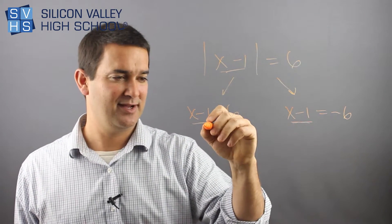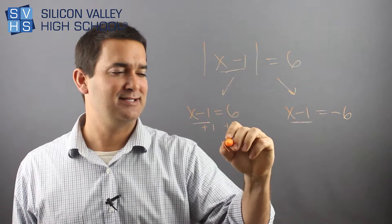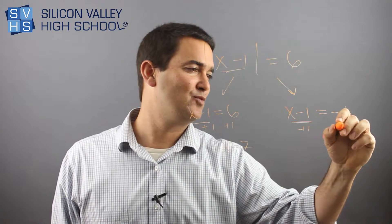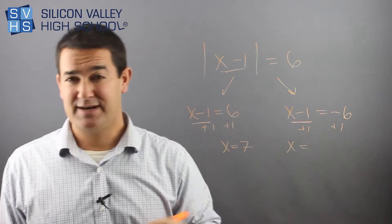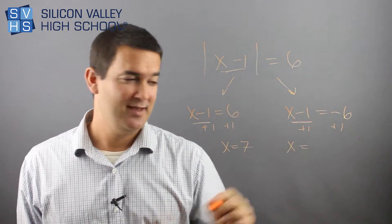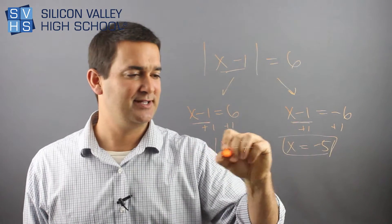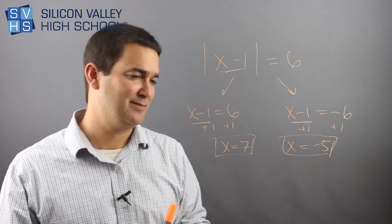And then, just solve them both separately. Plus 1, plus 1, x equals 7. And then over here, you have plus 1, plus 1, x equals, be careful, negative 6 plus 1 is negative 5. So these are your two solutions to that absolute value equation.